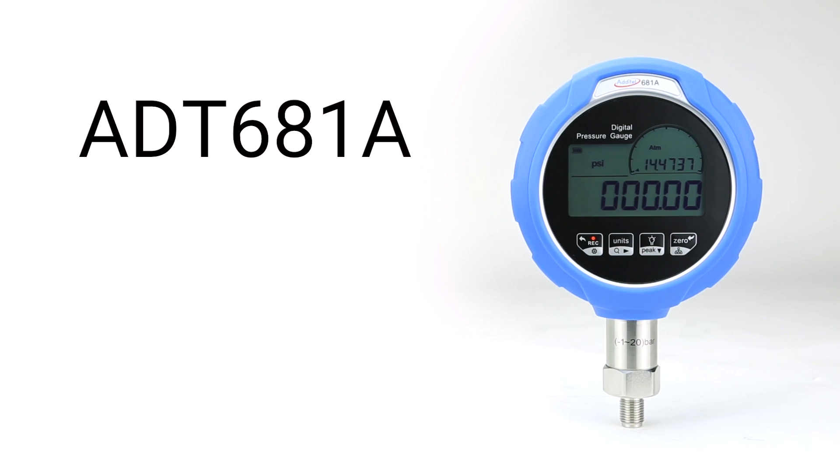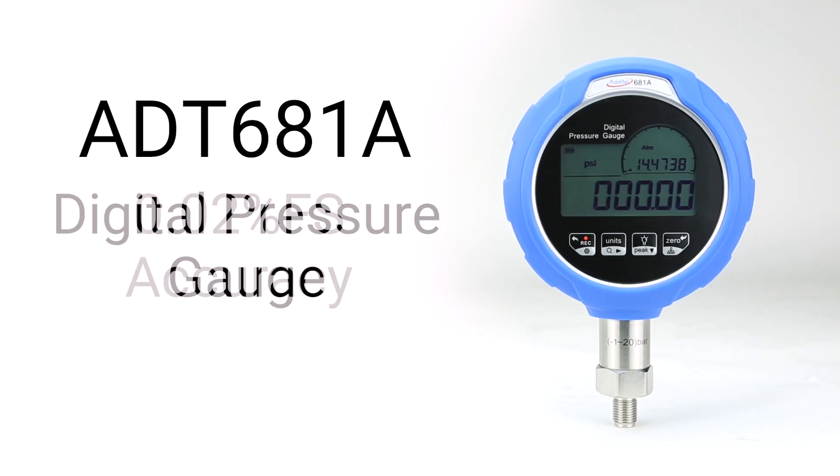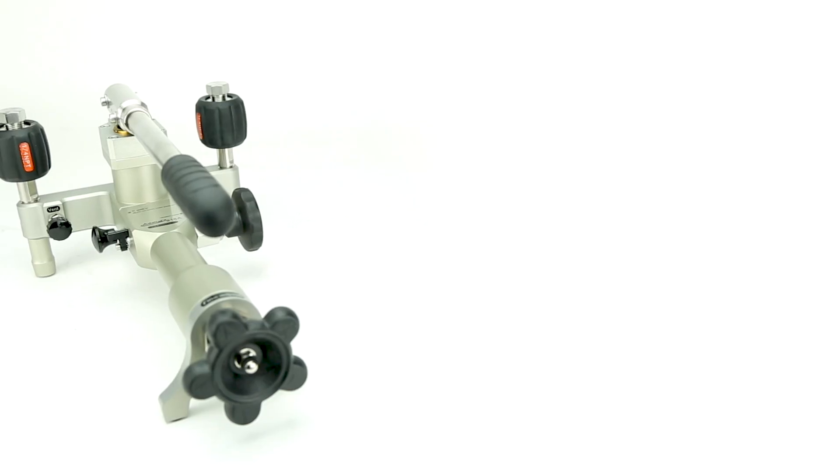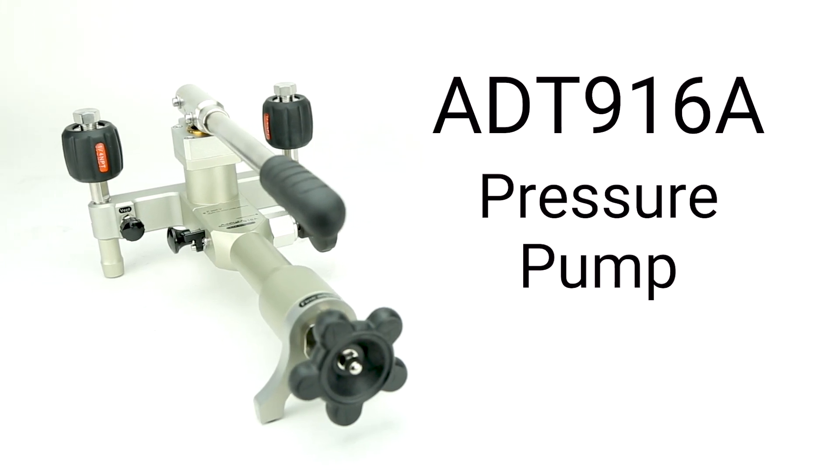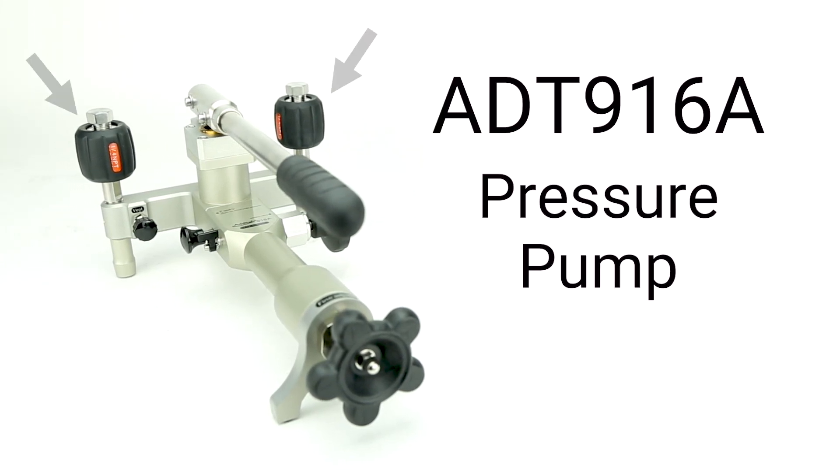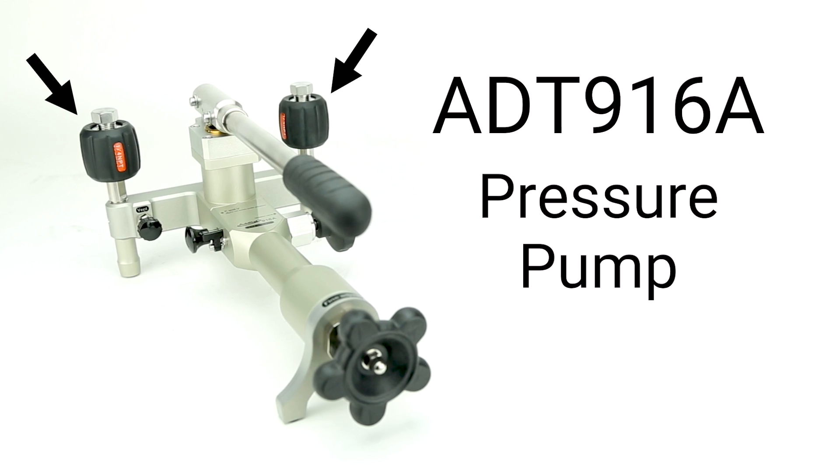For this, we'll use an Aditel 681A digital pressure gauge, which easily exceeds this requirement. Finally, we need a way to generate pressure. An Aditel 916A test pump will be used, since it has ports for both gauges built in to easily compare readings between them.